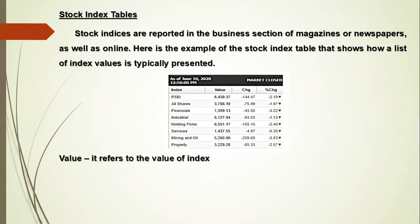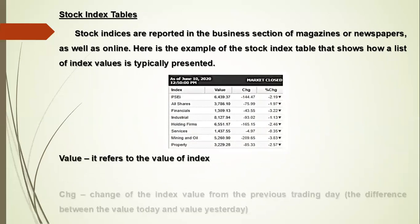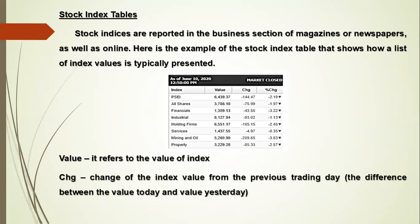The column 'Value' refers to the value of the index. 'CHG,' or change, is the change of the index value from the previous trading day — the difference between today's value and yesterday's value. 'Percent Change' is the ratio of change to value, calculated as change divided by value.